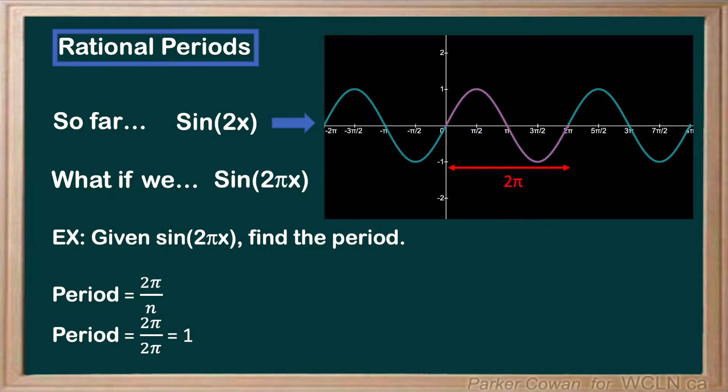2π divided by 2π gives us 1, which is a rational number. Thus, we can gather if our coefficient inside the brackets contains pi, we will end up with a rational period.